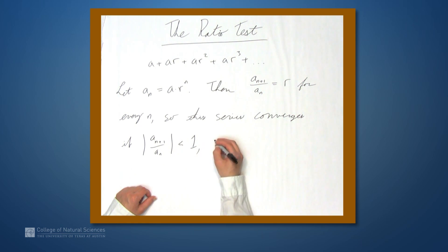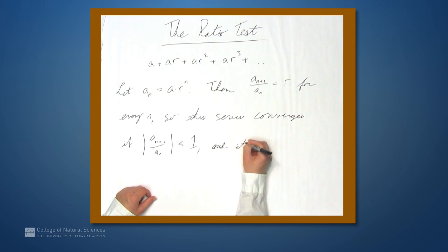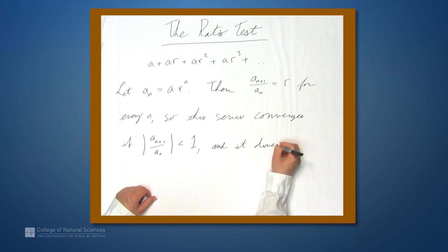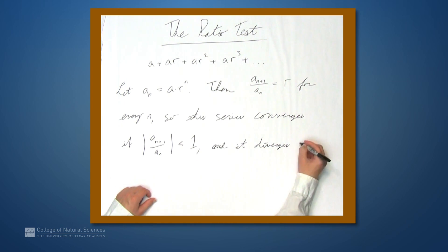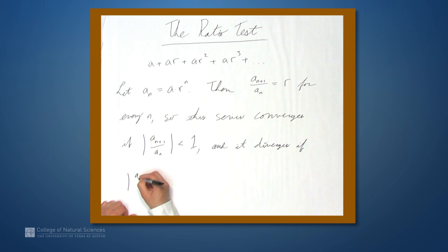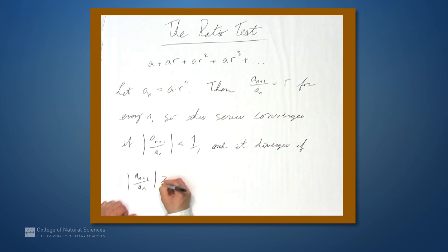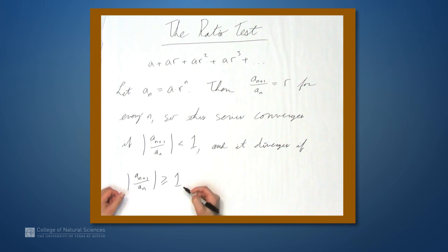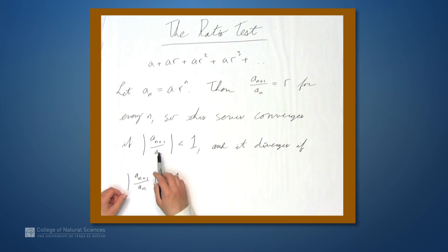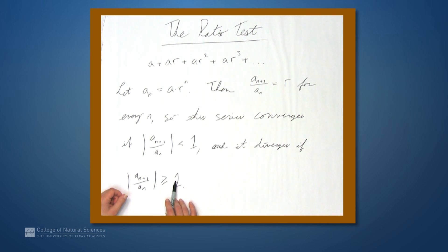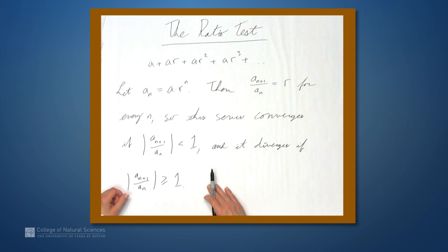This series converges if this ratio is less than 1, and it diverges if the absolute value of this ratio is greater than or equal to 1. We're going to use this basic idea to talk about the ratio test. The ratio test says that we can look at the limit of these ratios, and based on their value relative to 1, we can tell whether the series converges or diverges. Let's state that test now.